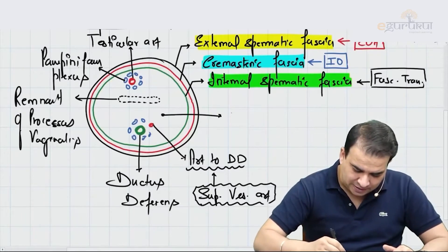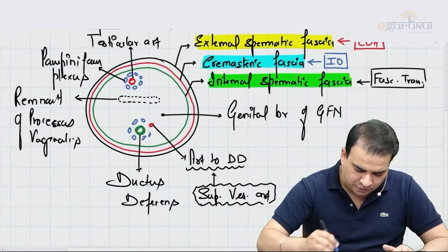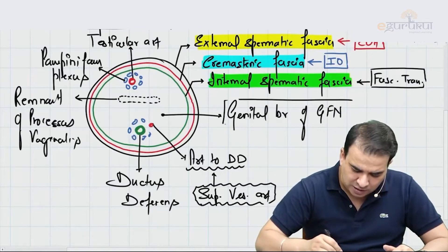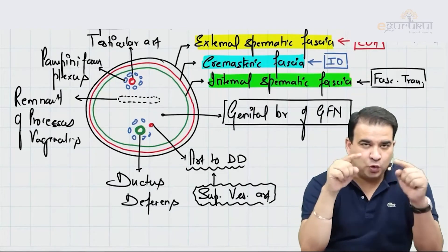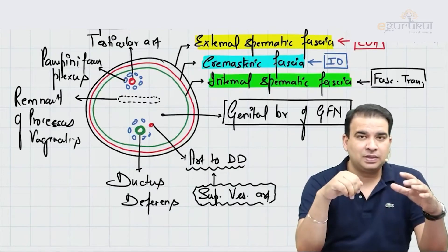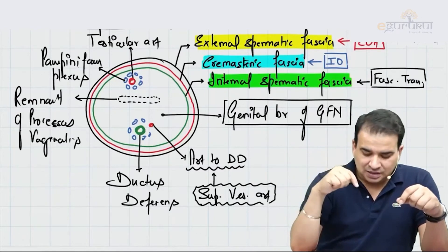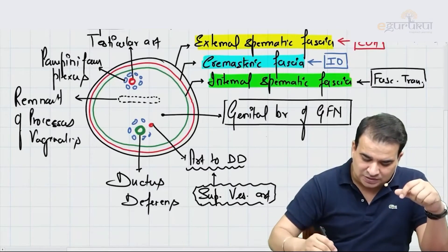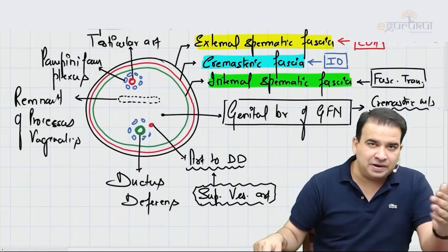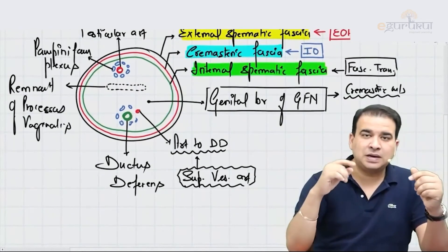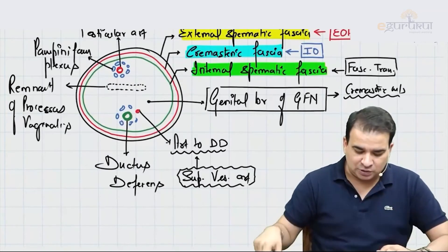The nerve seen inside the spermatic cord is the genital branch of the genitofemoral nerve. You may remember the genitofemoral nerve from the lumbar plexus. When we talked about the lower limb, the nerve supplying the roof of the femoral triangle was the femoral branch of the genitofemoral nerve, and that femoral branch forms the afferent of the cremasteric reflex. The genital branch of the genitofemoral nerve supplies the cremasteric muscle and is the efferent of the cremasteric reflex, and it is also a content of the spermatic cord.